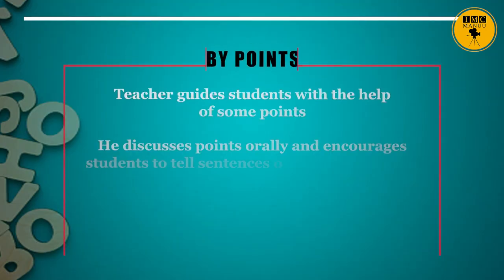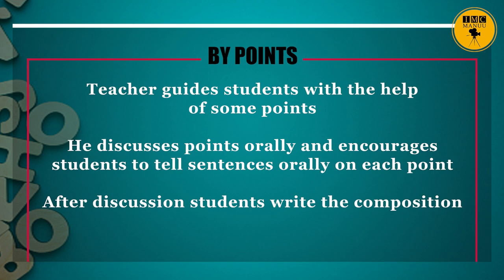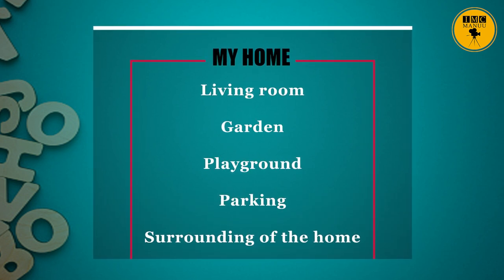The first technique: teacher can develop guided composition with the help of points. The teacher guides students with some points, discusses them orally, and encourages students to tell sentences orally on each point. After discussion, students write the composition. For example, the topic 'My Home' — points include: name of the area or colony, type of house, family details, rooms, kitchen, living room, garden, playground, parking, and surroundings. The teacher discusses each point with students and then asks them to write the composition.